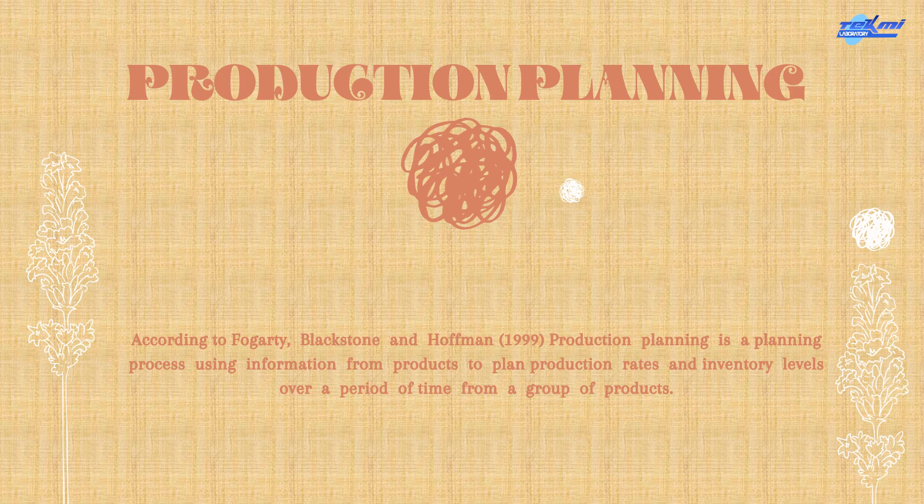First, production planning. Production planning, according to Fogarty, Blackstone, and Hoffman, is a planning process using information from products to plan production rates and inventory levels over a period of time from a group of products.